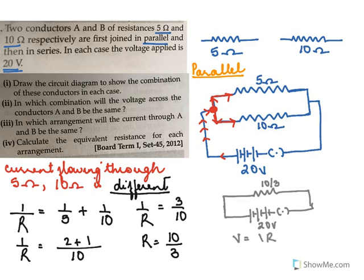The effective resistance is 10/3 ohms and the voltage is 20 volts. Using V equals IR: 20 equals I times (10/3), so the current I equals 20 times 3 over 10, giving a current of 6 amperes flowing in the parallel circuit.